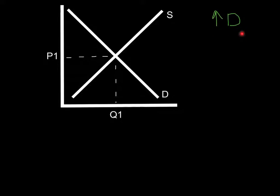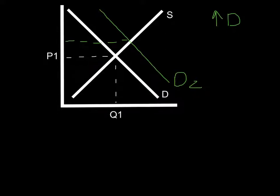So what happens when the demand curve shifts to the right? The entire curve shifts out to the right, and we call that D2. The first thing we do is find the new equilibrium point. That new equilibrium point is going to be up here — at a higher price, P2 — and the new quantity is going to be Q2, which is an increase in quantity. The key is to find the new intersection point between the new demand curve and the old supply curve.